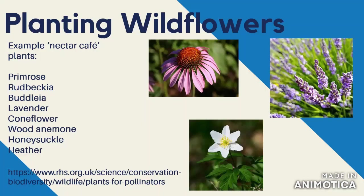We have examples here: primrose, rudbeckia, buddleia, and lavender. If you plant a nice diverse range of flowers and make sure there will be things flowering all throughout from spring to autumn, you cover as much time as possible. You don't want a nectar cafe that's only available for one or two months of the year — you want to spread it out.